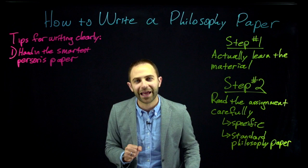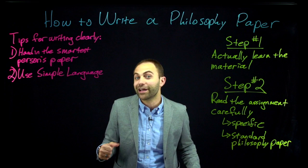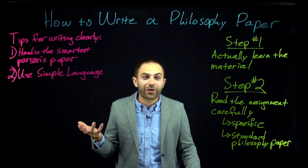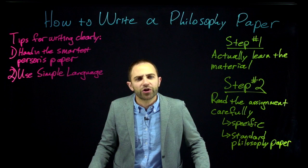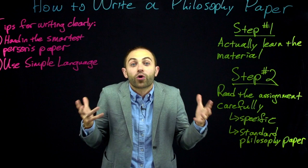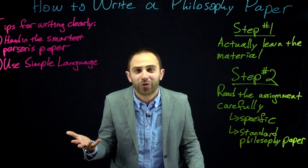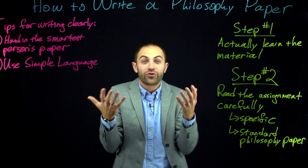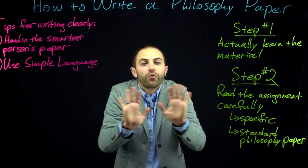Tip number two: use simple language. A philosophy paper is not a place to demonstrate that you know big words. Don't use words you don't understand. It's like my dad, who will say something like, 'I texted you an email.' No, dad — you can't text an email. You can text a text or send an email; that's how those words are used. If there are philosophical technical terms from this course that you still can't figure out how to use, fine — don't use them. Just use simple, straightforward language. That's all we're looking for.